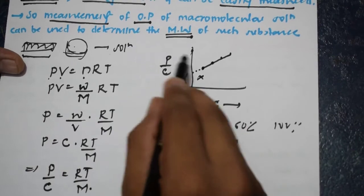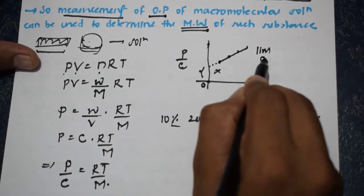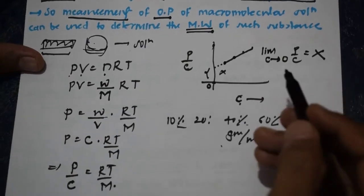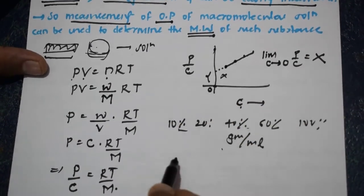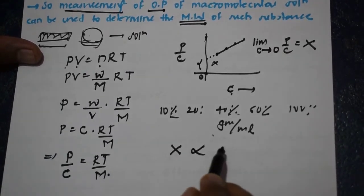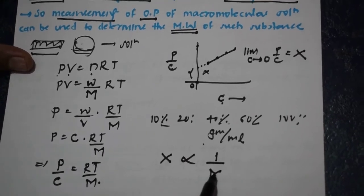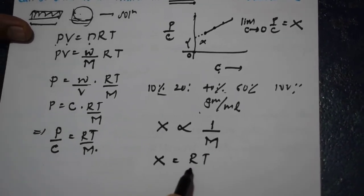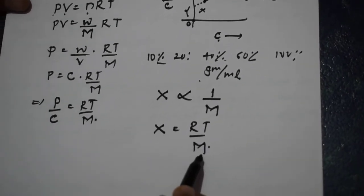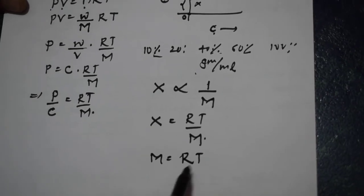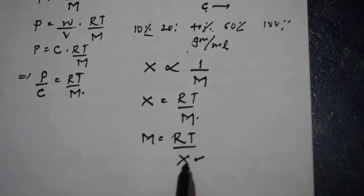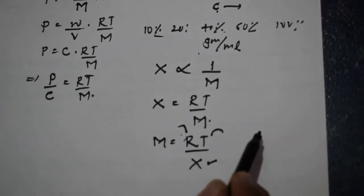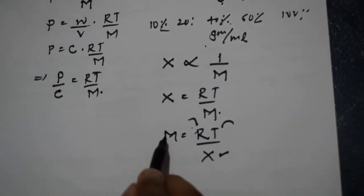Let the reduced osmotic pressure be x. It is denoted as the limit as concentration tends to zero of the ratio P by C equals x. It is determined that this reduced osmotic pressure x is inversely proportional to the molecular mass. It is also seen that x is equal to RT divided by m, where m is the molar mass. Therefore, m is equal to RT divided by x. We get x graphically as the reduced osmotic pressure, R is the known gas constant, and T is the room temperature at which the experiment is carried out.